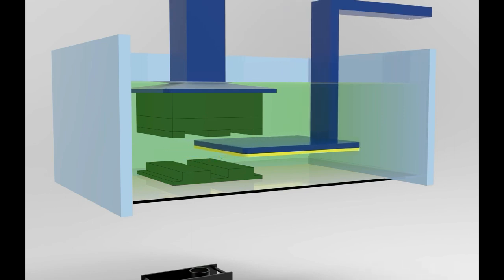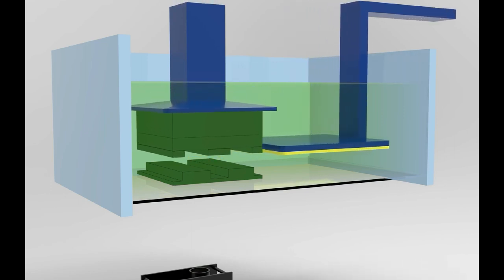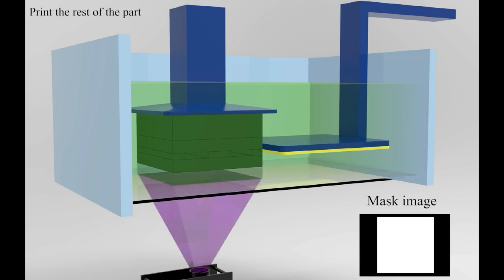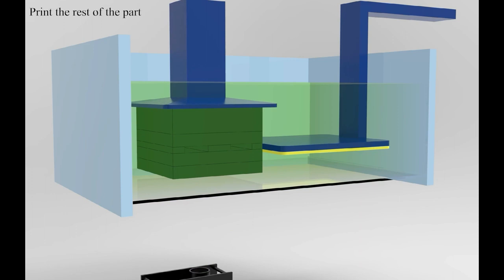When the AUX platform removes, the printed roof remains stationary on the resin VAT surface and then transferred to the previously built part with the second exposure of a planned mask image. All the other layers are printed using the normal VPP process with the main build platform.